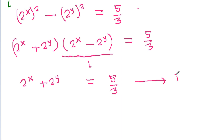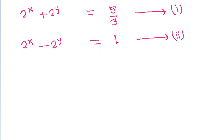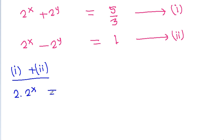Suppose this is equation 1 and we have 2 power x minus 2 power y is equal to 1, suppose this is equation 2. If we add equation 1 and equation 2, then we will get 2 times 2 power x is equal to 5 by 3 plus 1, which will be 8 by 3.